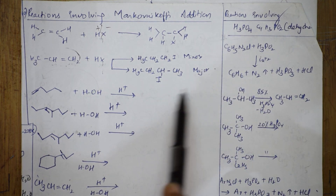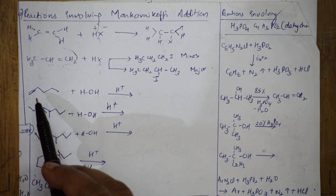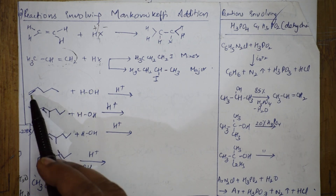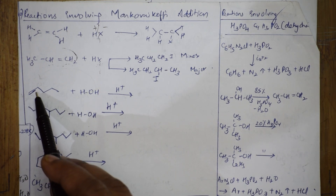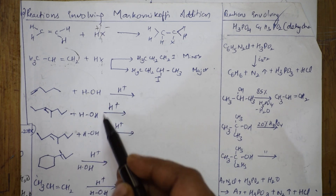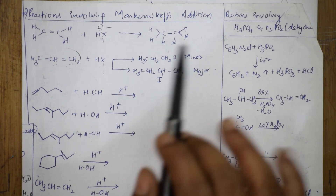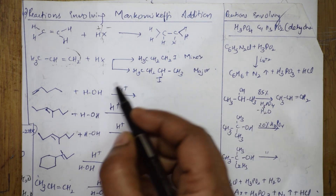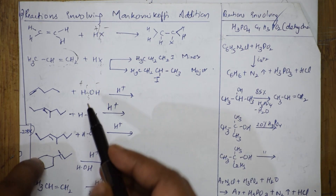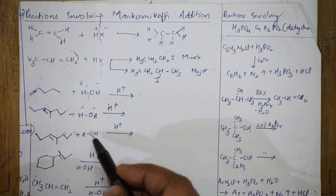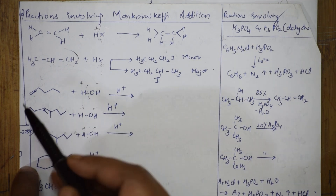Now observe carefully. In the exam paper, if they give you a bond line structure and ask you to add water in the presence of H⁺ ion (acidic medium), break the bond — H is plus and OH is minus. So the negative addendum is OH⁻. As soon as a bond line structure is given to you, write the number of carbon atoms. Wherever you have joints in the structure, all are carbon atoms.